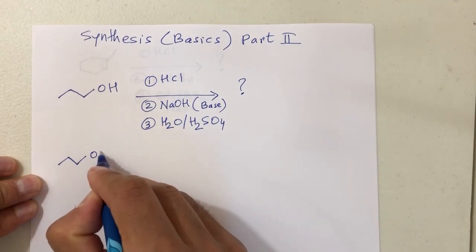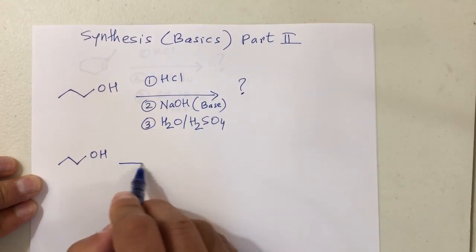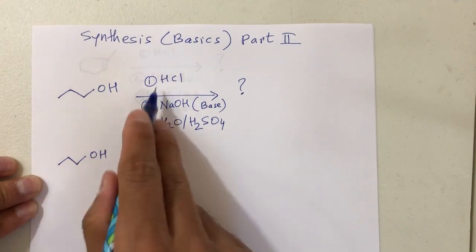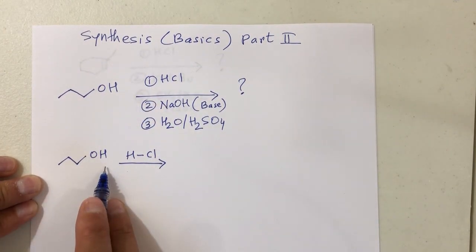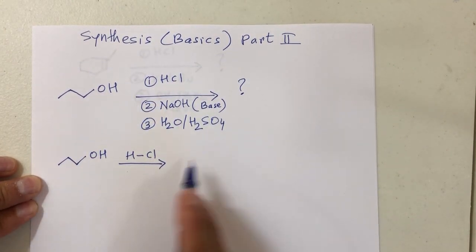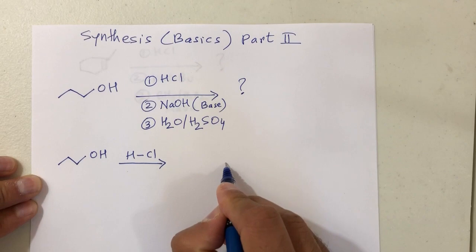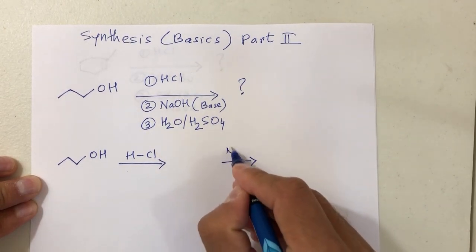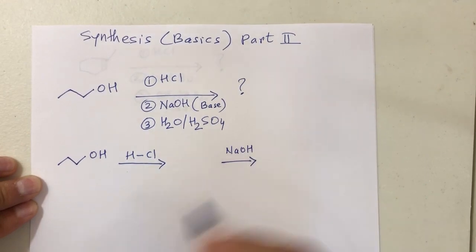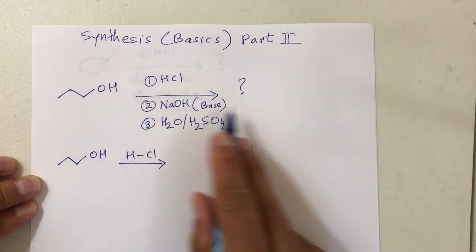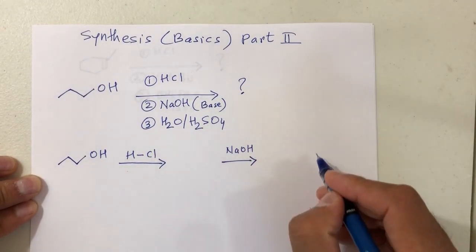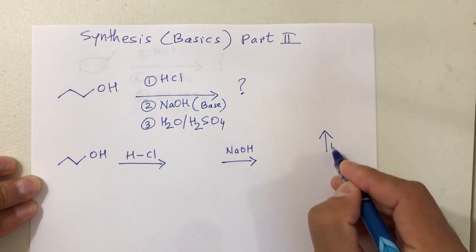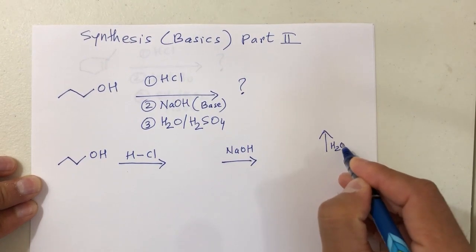So I have OH and it reacts with HCl — these two will react first. Then the product of this will react with number 2, that is NaOH. And the product of 2 will react with number 3, which is H2O and H2SO4.